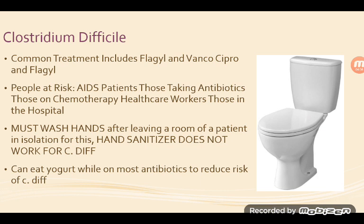Sometimes when people are on antibiotics, chemotherapy, or have HIV, their normal flora — which I refer to as the parents — are killed off. What we're left with is a bunch of rowdy teenagers causing problems, which I call C. diff. Common treatment includes Flagyl and Vanco, or Cipro and Flagyl — it's a Flagyl combo that's used.